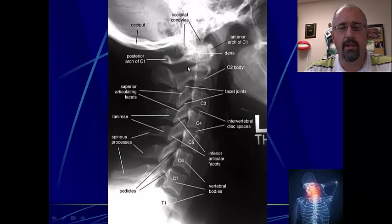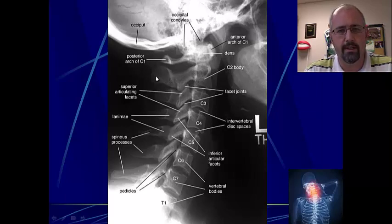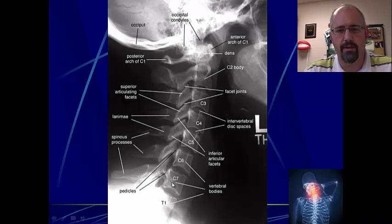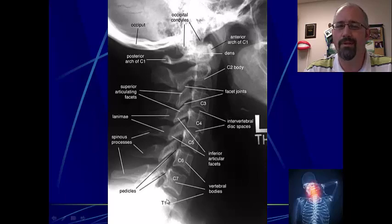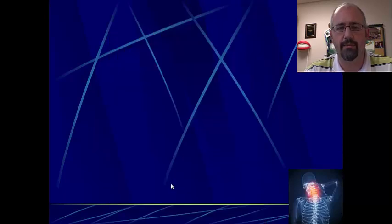We had a quick look at the x-rays earlier on just to get ourselves familiarized. Looking at the bodies of the vertebrae, the spinous processes, the transverse processes coming in through here — C1, C2, right the way down through to C7 and T1. Remember there is a C8 nerve level that we're going to come to when it comes to dermatomes and myotomes, but there's no C8 vertebral body itself. So it's C7 and then T1.